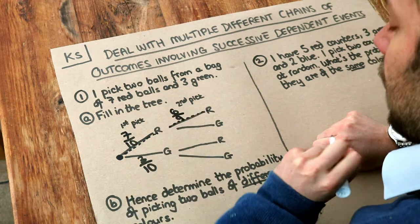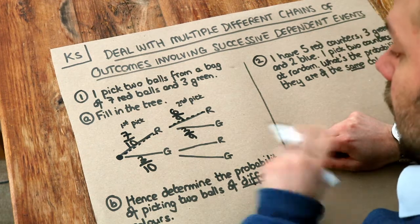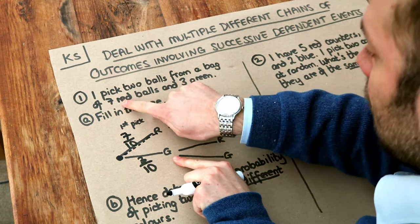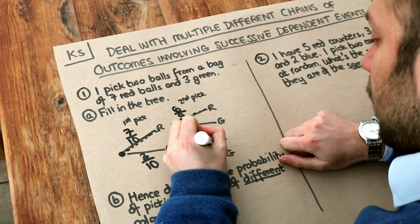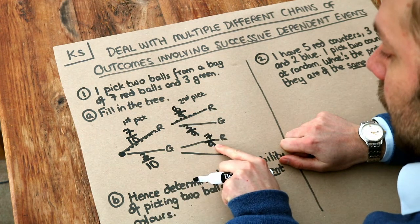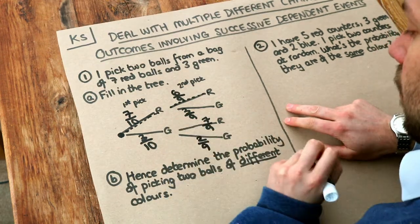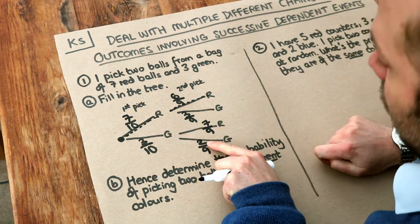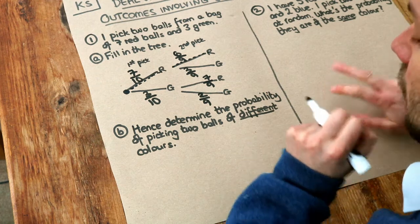Of the nine balls remaining, three of them are green. Now what if I picked green for the first pick? I've only got seven red left and two green, so out of the nine balls, seven are still red — seven ninths probability of getting red given I picked green first — and two ninths probability of getting green, because two of the nine remaining balls are green. Hence, determine the probability of picking two balls of different colours.